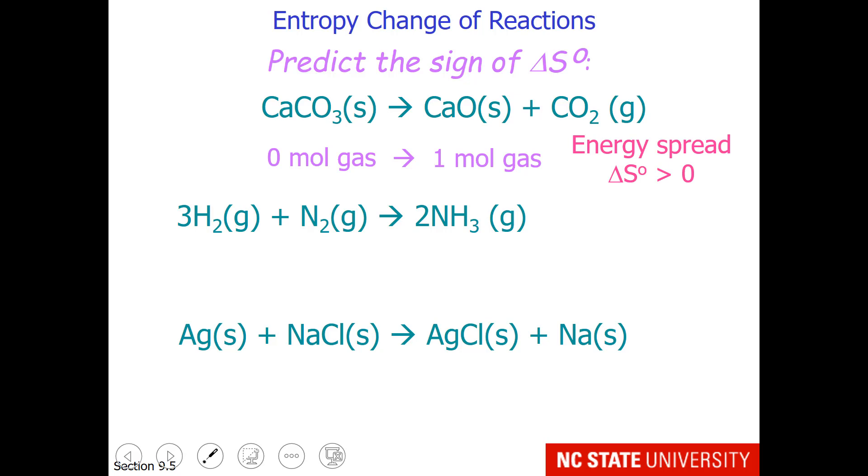For this next reaction, we have three moles of hydrogen gas and one mole of nitrogen gas on the reactant side, and we go to two moles of ammonia gas on the product side. Gas is decreasing, therefore the entropy change is negative. We are concentrating the energy among fewer states.